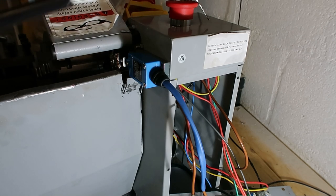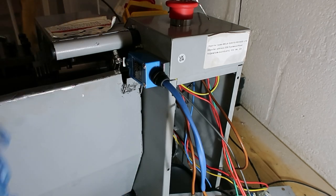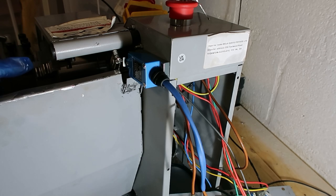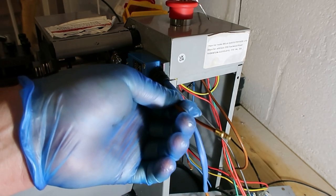So now you cannot start the lathe with the cover up. It must be at least in that position, so you're not going to have the chuck key in. Then when you're actively doing that, you're obviously not going to have the chuck key in.